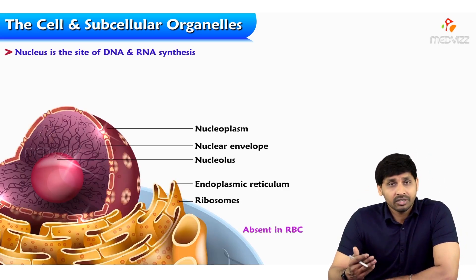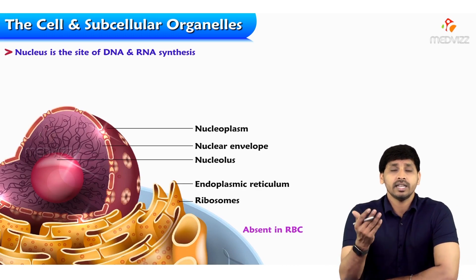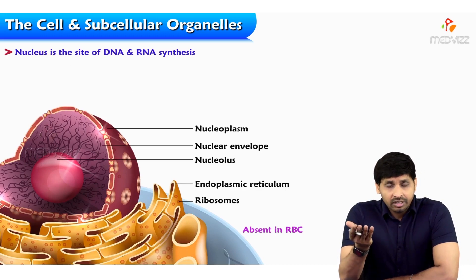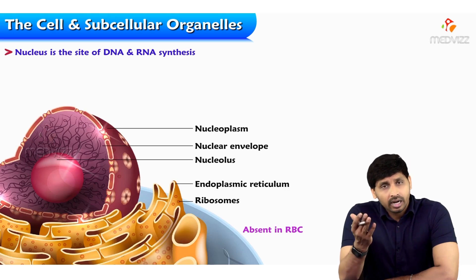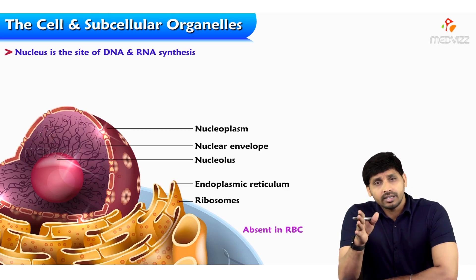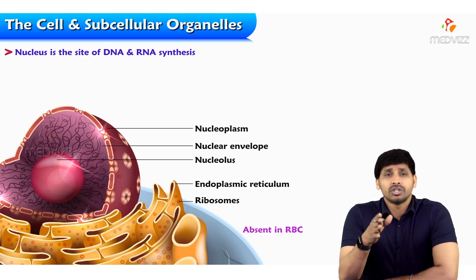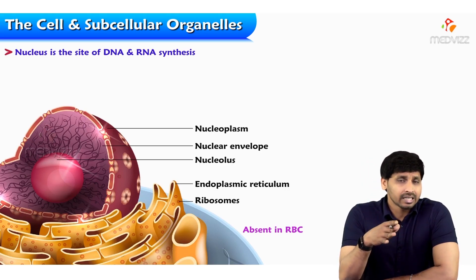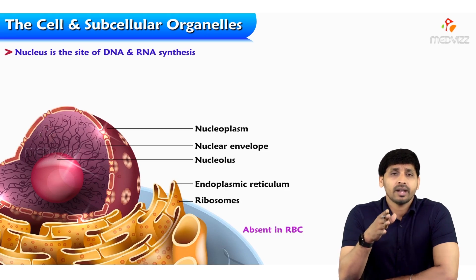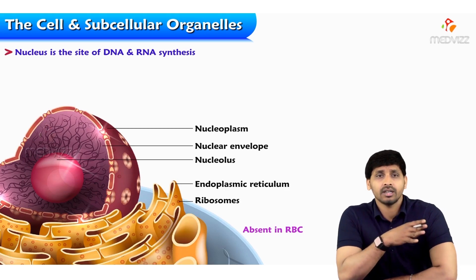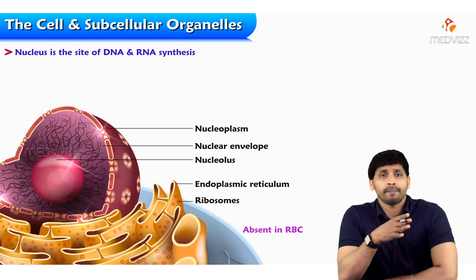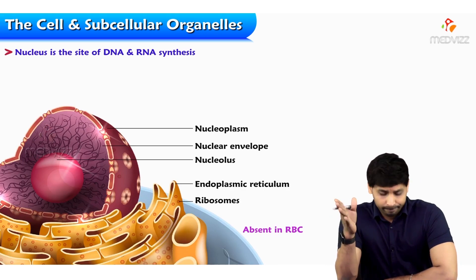The nucleus is the site of DNA and RNA synthesis. DNA is useful for replication — that is, production of new daughter cells. RNA synthesis means DNA-directed RNA synthesis, known as transcription, which involves production of single-stranded mRNA. This mRNA carries the genetic information from DNA to the protein level.